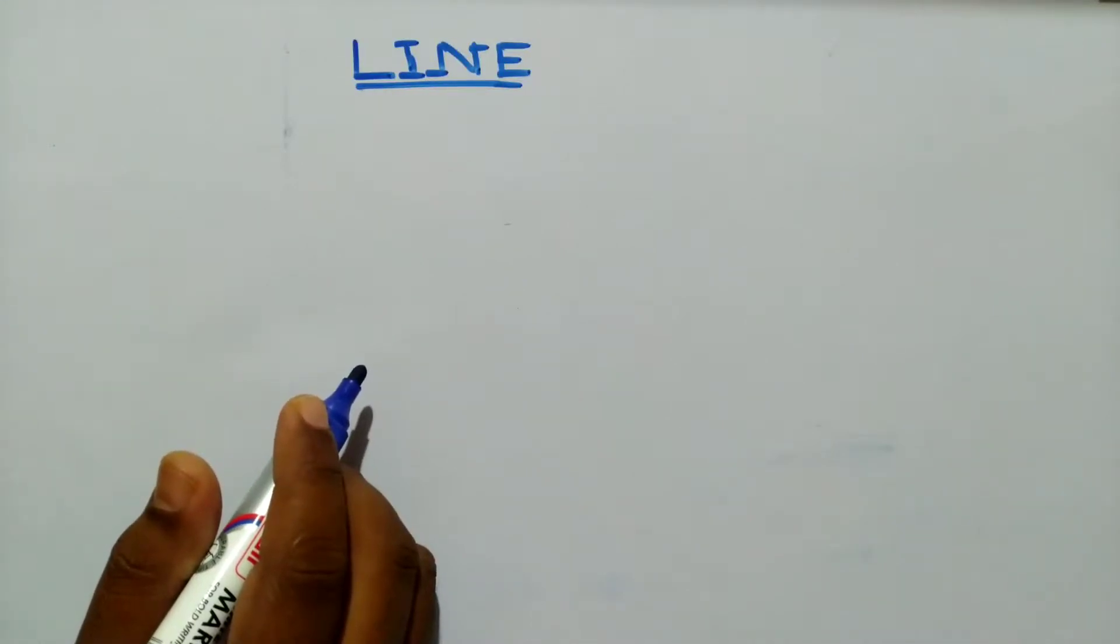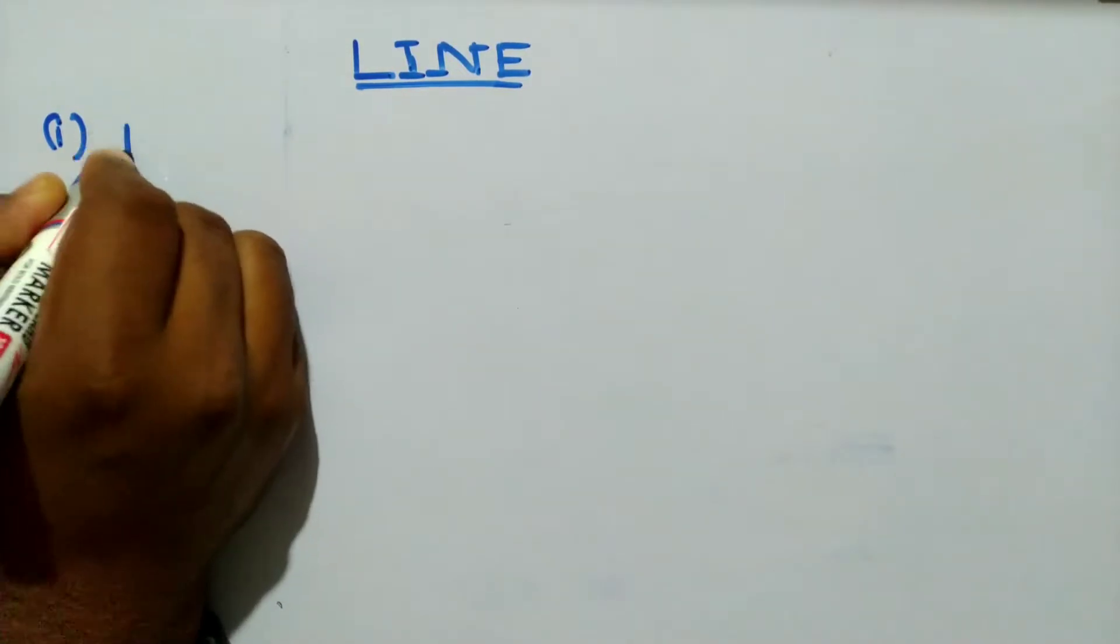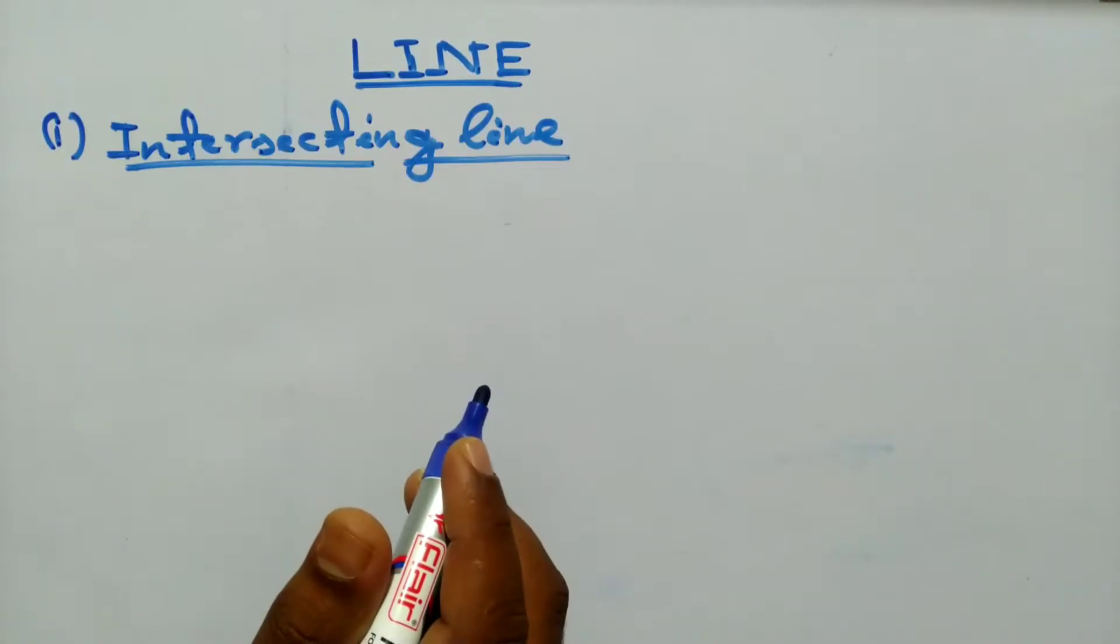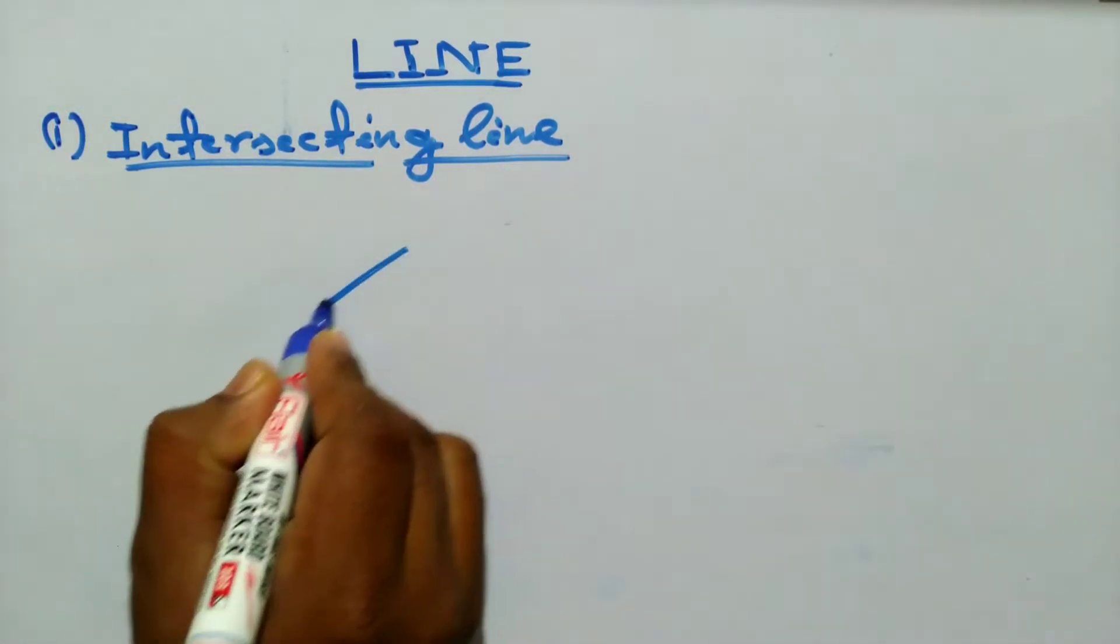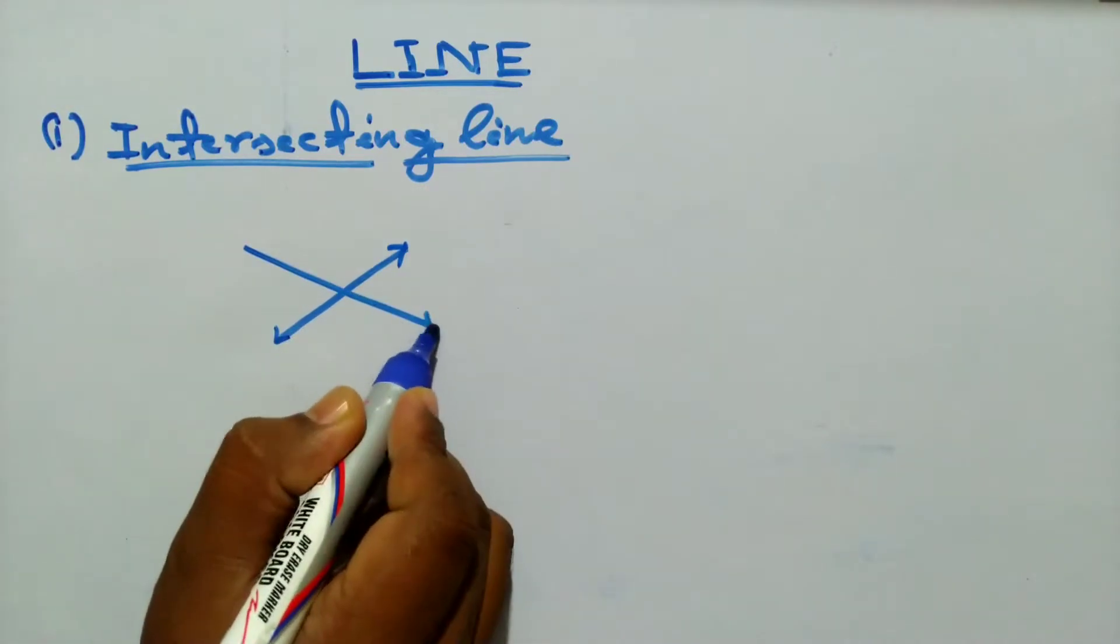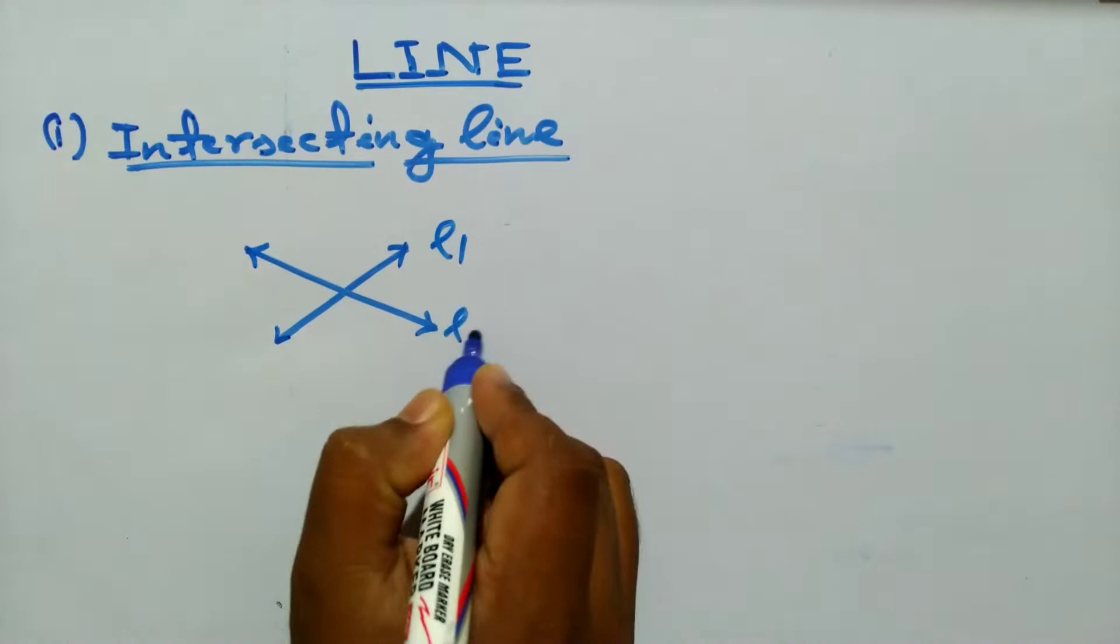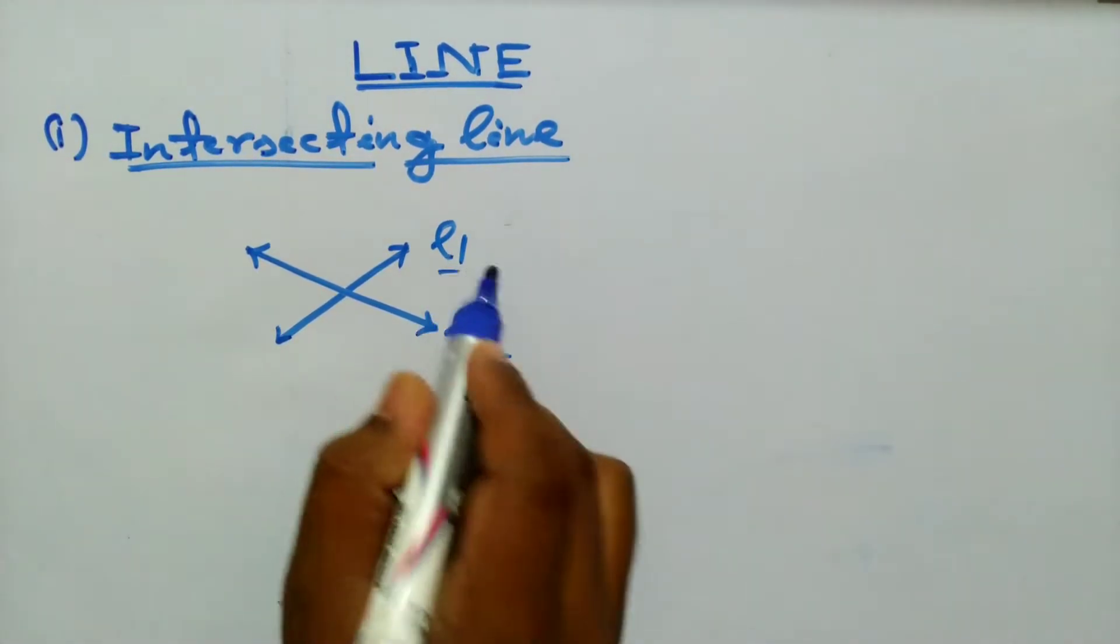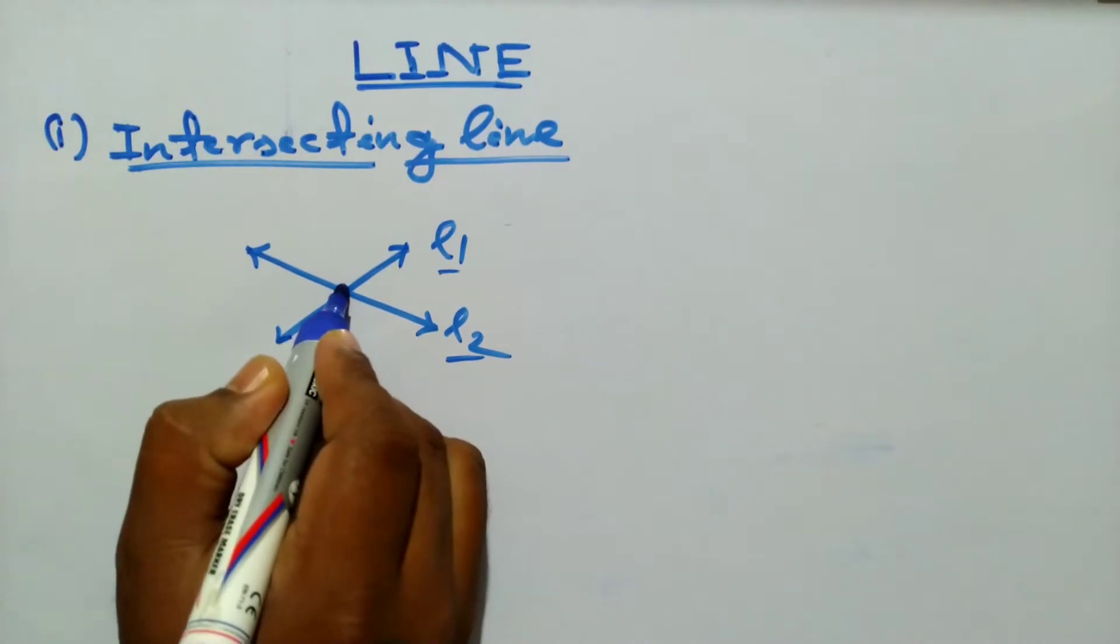Hello everyone, today's topic is line. Number one is intersecting line. What is intersecting line? First draw a line, again draw another line. Name the lines l1 and l2. Both lines l1 and l2 pass through a point. Name the point P.